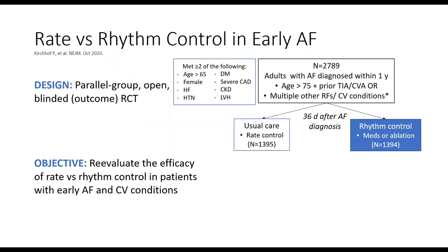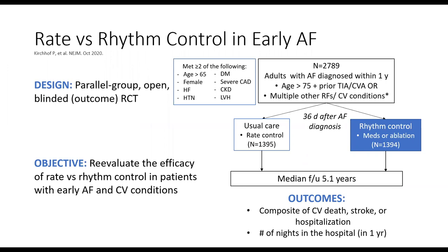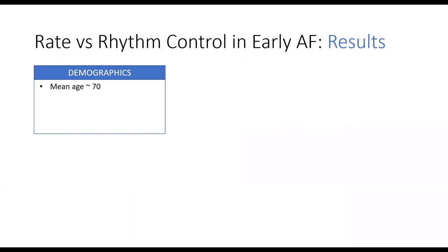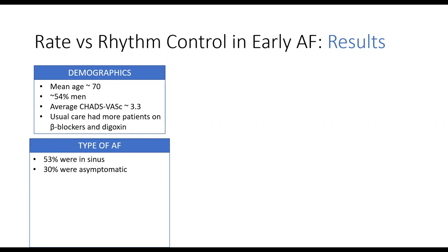The outcomes were the composite of cardiovascular death, stroke, and hospitalization, as well as number of nights in the hospital. The mean age was about 70, pretty evenly split between men and women, with an average CHADS-VASc score of about 3.3. The only difference between groups was that the rate control group expectedly had more patients on rate-controlling agents such as beta blockers and digoxin. Patients were pretty evenly split between persistent AFib, first episode of AFib, and paroxysmal AFib. Interestingly, about 50% of patients were in sinus at the time of enrollment and about 30% were asymptomatic.